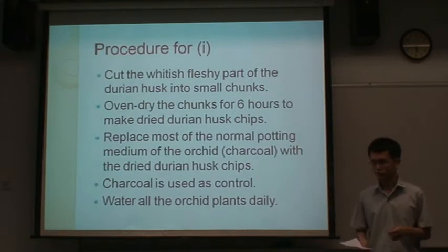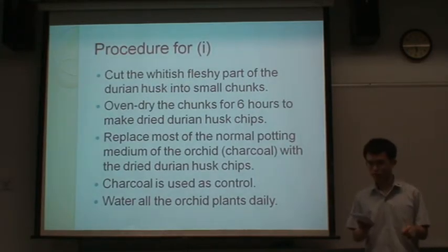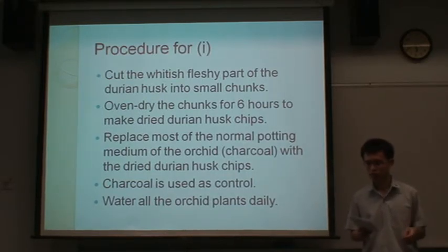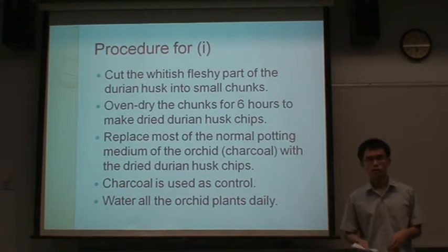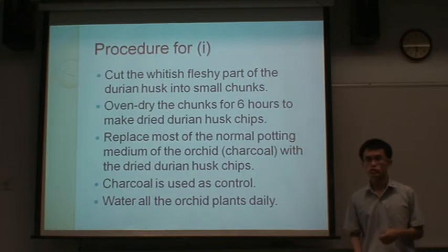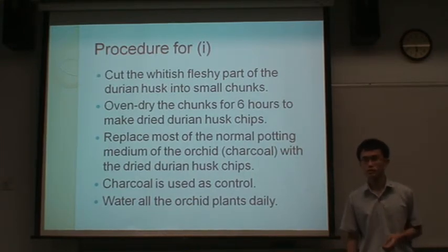The procedure is as follows: the wide fleshy part of the husk is cut into small chunks. The chunks are then placed in the oven and dried for over 6 hours to produce Durian Husk chips. Following that, the charcoal growing medium is removed and replaced with the Durian Husk chips. The charcoal is used as a control, and all the orchid plants are watered daily.